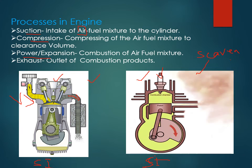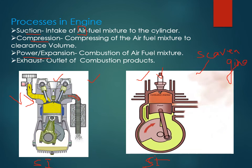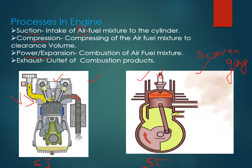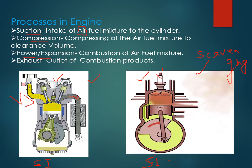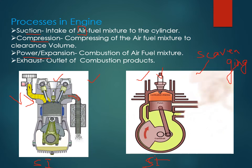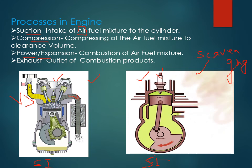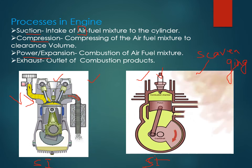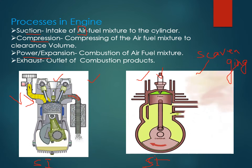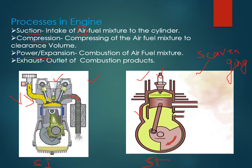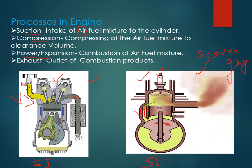In a two-stroke engine, there is a process called scavenging. Scavenging is the removal of exhaust gases through the pushing force of the incoming inlet charge. In a four-stroke engine we have valves, whereas in a two-stroke engine we have ports: one inlet port, one exhaust port, and one transfer port.